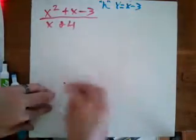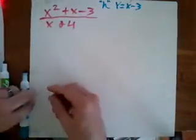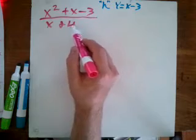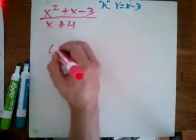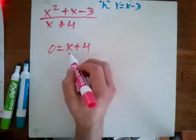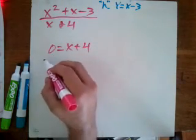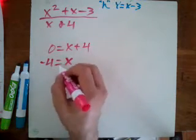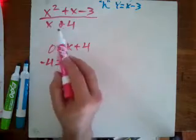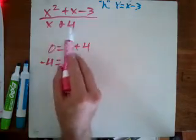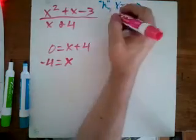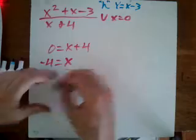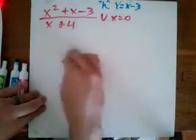Now we need to find our vertical asymptotes. We do that by finding when the denominator equals zero. Setting zero equals x plus 4, we subtract 4 from both sides and get x equals negative 4. That makes sense — if we plug negative 4 into the denominator it becomes zero, and we can't divide by zero. So our vertical asymptote is x equals negative 4.